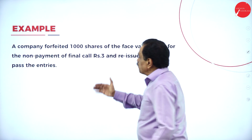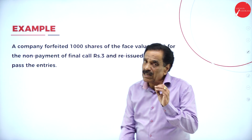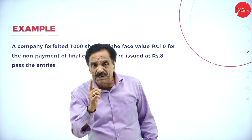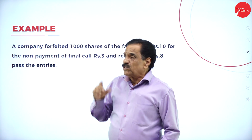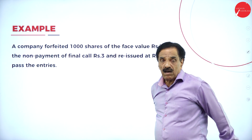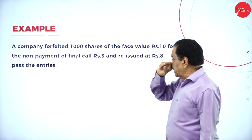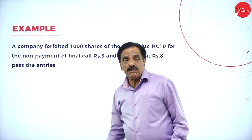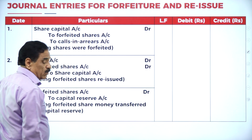Problem 1: A company forfeited 1,000 shares of the face value of ₹10 for the non-payment of final call of ₹3, and reissued at ₹8. Final call of ₹3 means he already paid application, allotment, and first call to the extent of ₹7, but he fails to pay the final call. Pass the entry. Entry: Share Capital Account Dr. to Forfeited Shares Account, to Calls in Arrears.